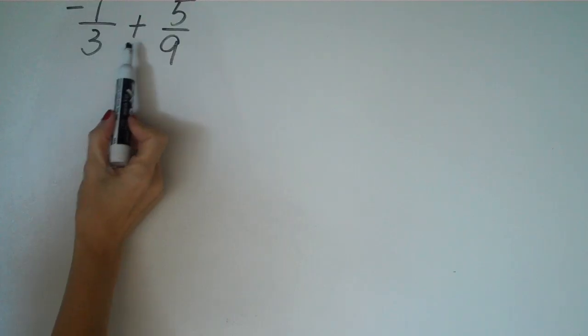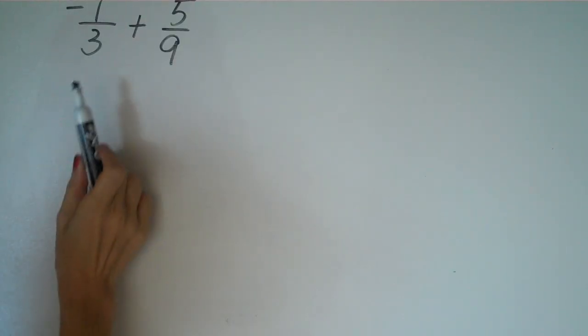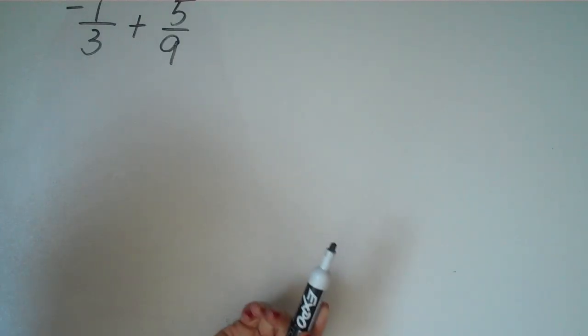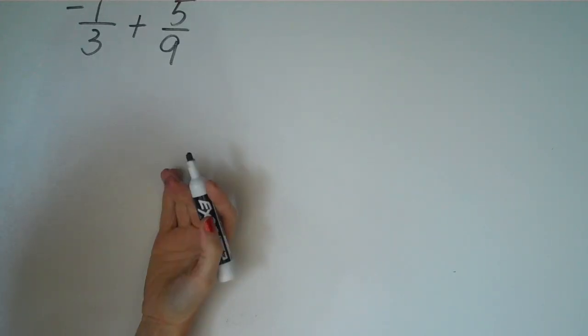So let's look at negative 1 third plus 5 ninths. The first thing I want to notice is look at the denominators. They are different. So we know we have to find a common denominator before we can add these.